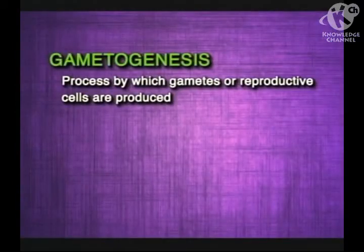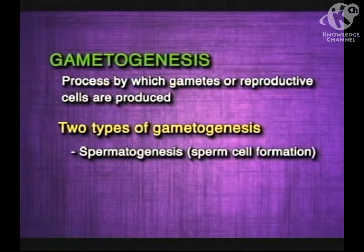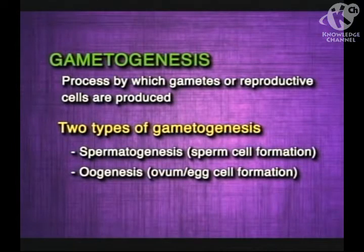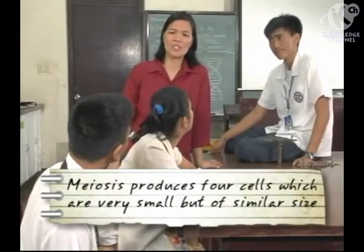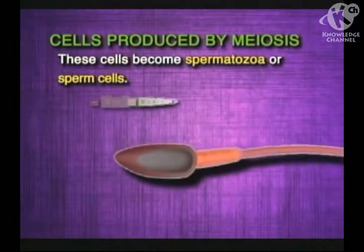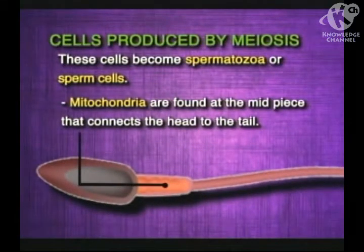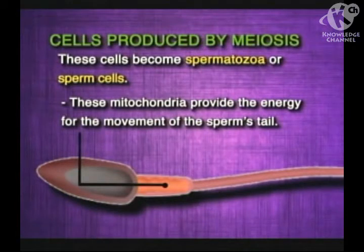How do sex cells form in the first place? Gametogenesis is the process by which reproductive cells like sperm and egg cells are produced. There are two types of gametogenesis: spermatogenesis, or sperm formation, and oogenesis, or ovum or egg cell formation. Sperm cells are produced in the testes of male animals. Meiosis produces four cells which are very small but of similar size — these cells become spermatozoa or sperm cells. The nucleus is found in the head of the sperm, and mitochondria are found at the midpiece connecting the head to the tail, providing energy for the movement of the sperm's tail.